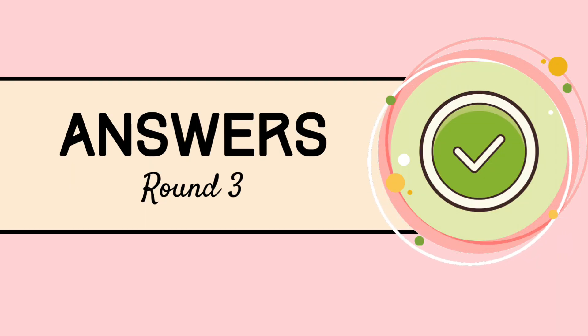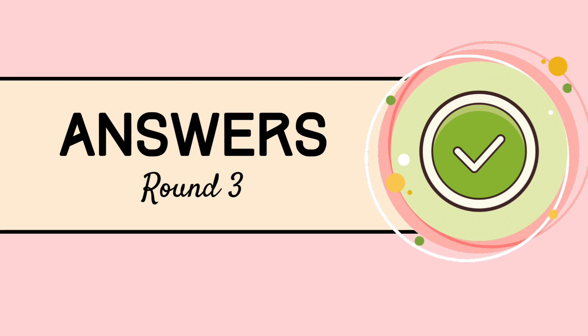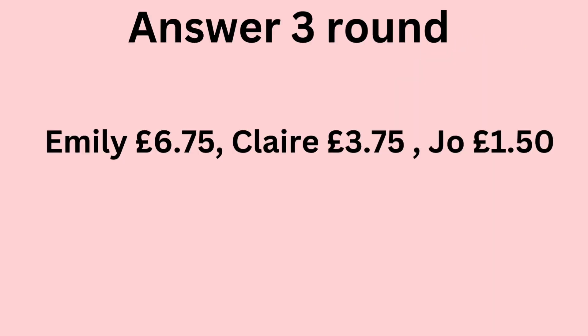£12.50 is shared between Emily, Claire and Joe in the ratio of 9 to 5 to 2. Emily receives £6.75, Claire receives £3.75, and Joe receives £1.25.